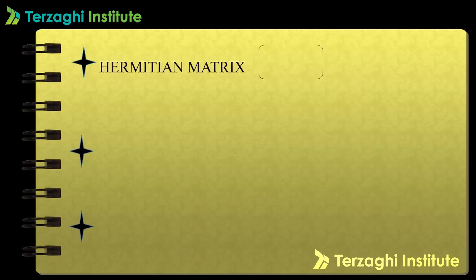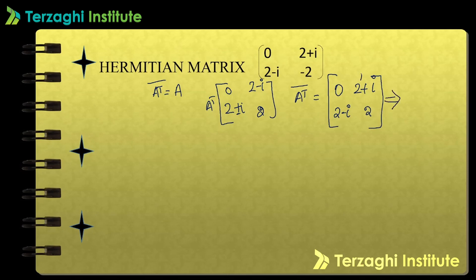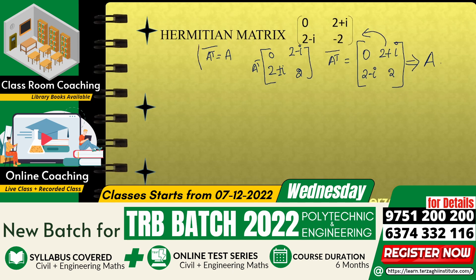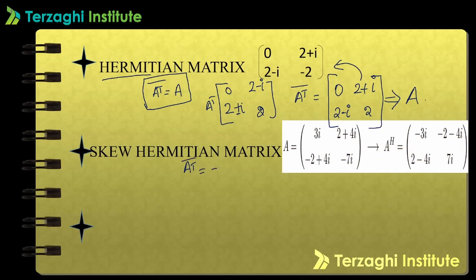Next is the Hermitian matrix. In a Hermitian matrix, the transpose conjugate of the matrix is equal to the matrix itself. For skew Hermitian, similar to skew symmetric, the condition is that A transpose conjugate equals minus A.